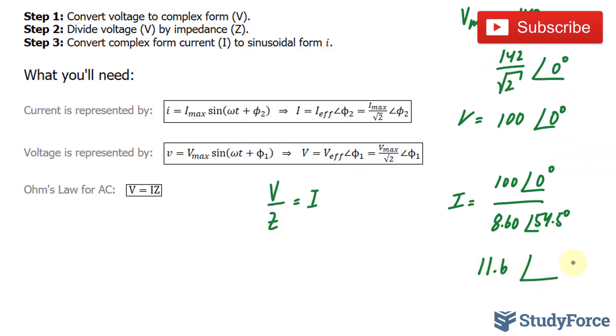We also subtract the angles. In our case, we have φ = 0° - 54.5°, which gives us -54.5°. So 11.6 ∠-54.5° represents the current in polar form.